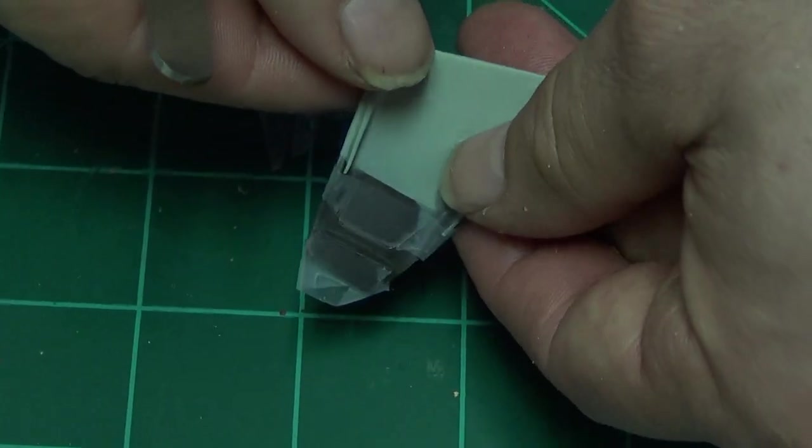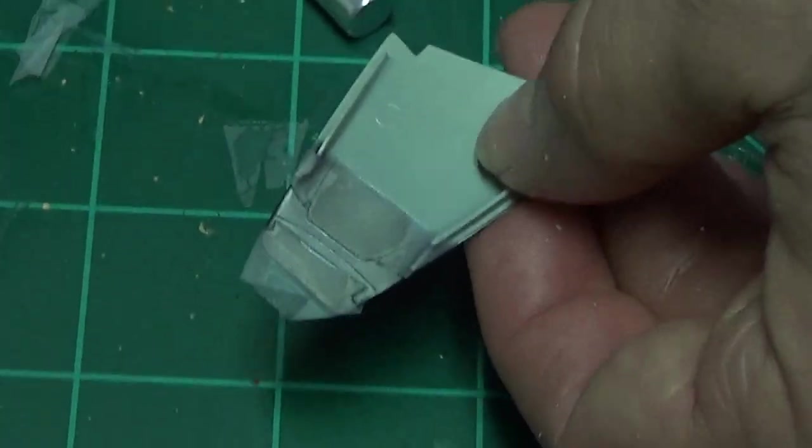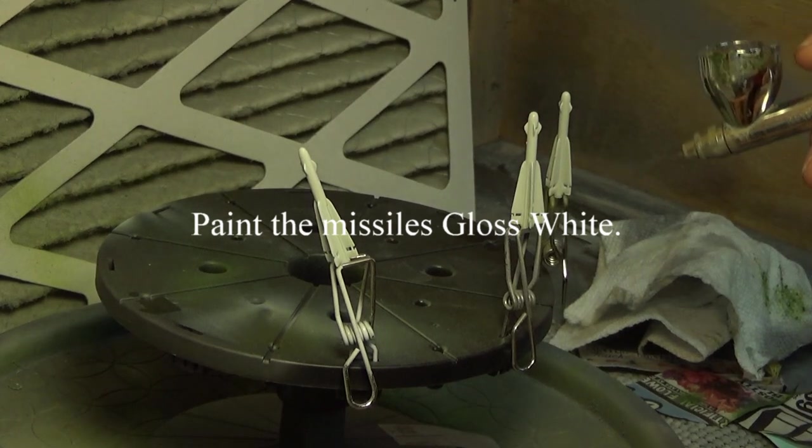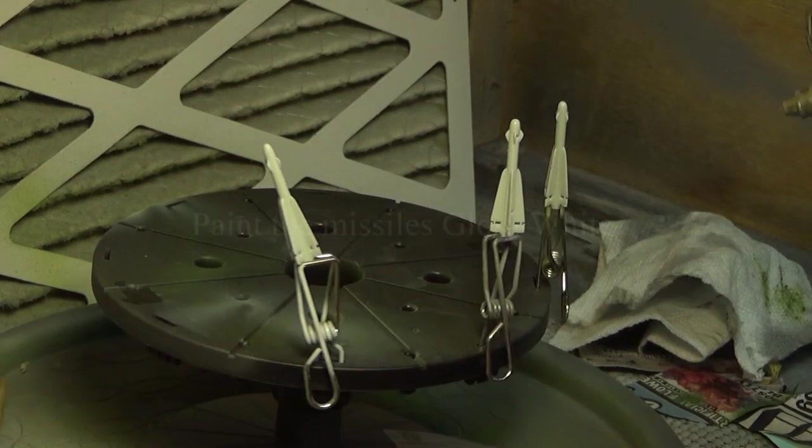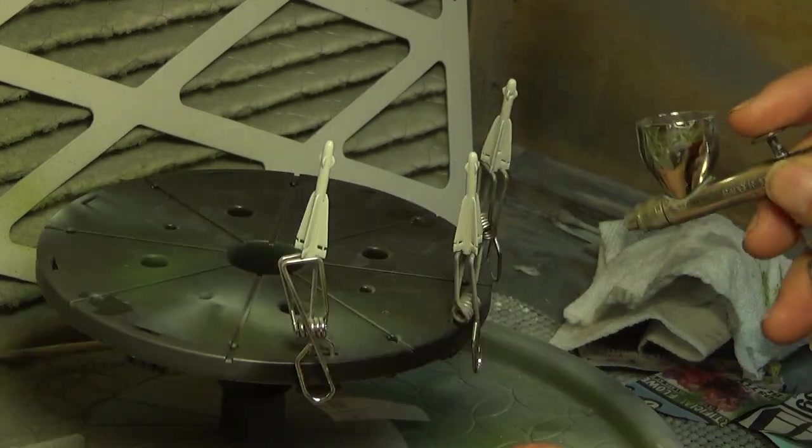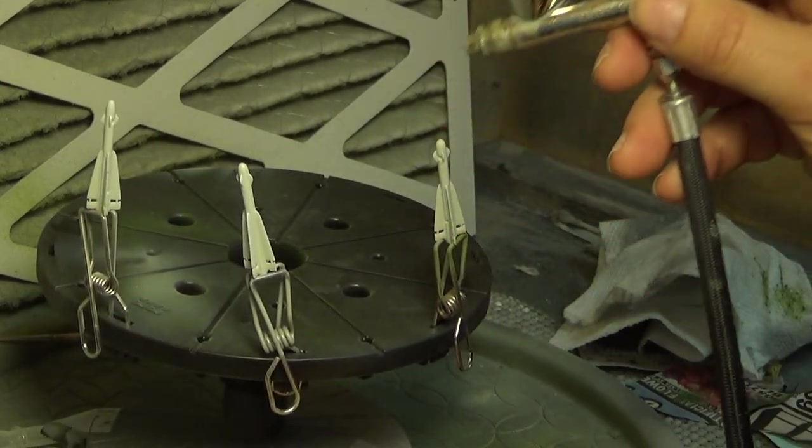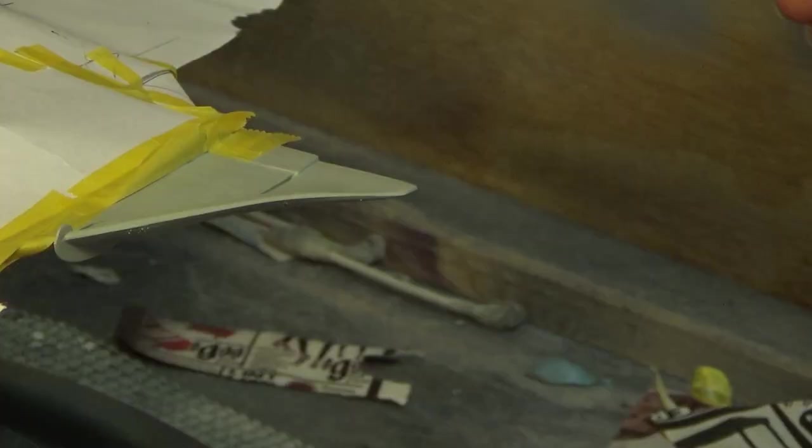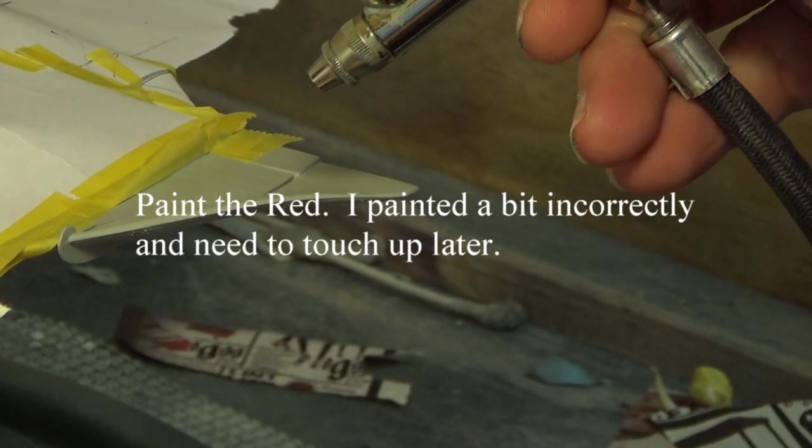So what we're doing now is we are painting everything that goes red. You see my missiles right here? These missiles are basically covered up at the top, and we're just going to paint these. Actually, I'm sorry. They're not covered up at the top. I don't know what I'm thinking. We cover them later. They're getting painted white, and then we'll let those dry.